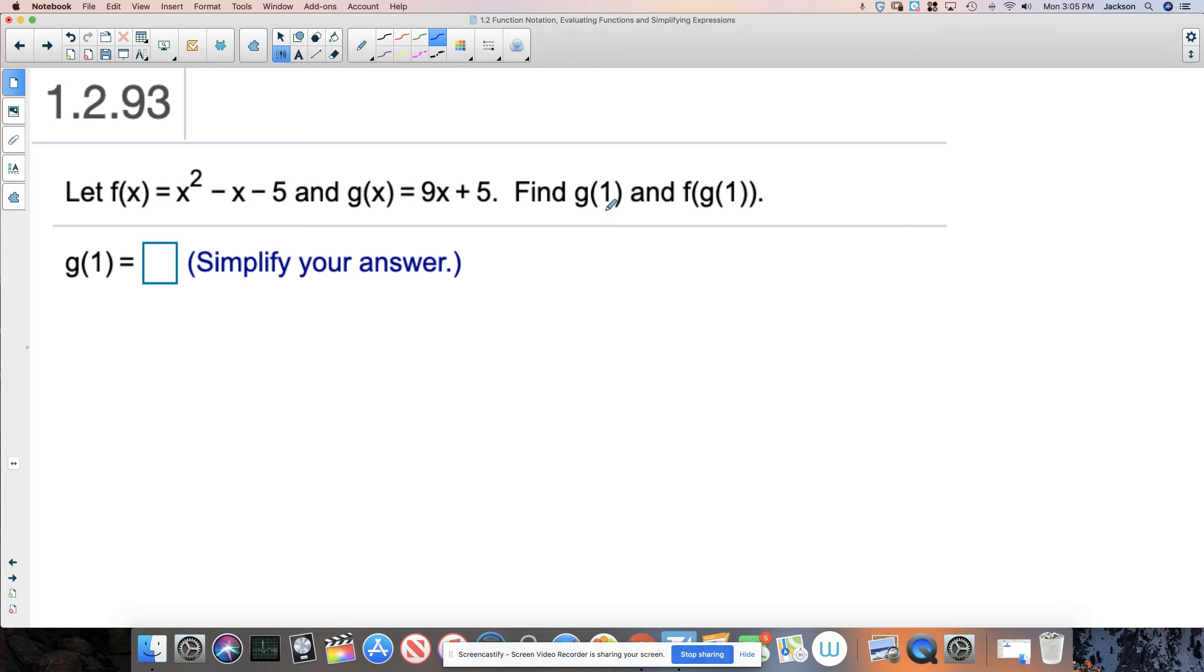Then they say find g of 1, right? So easy enough, we're going to take 1, and we're going to put it wherever the x is here. So g of 1 would be 9 times 1 plus 5. Simple enough. 9 times 1 is 9, plus 5 is 14.